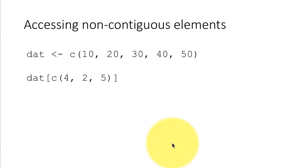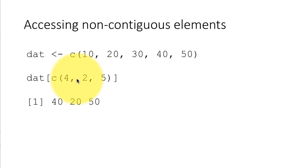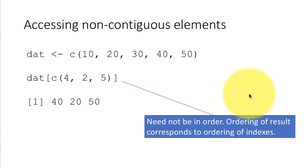Here's another example: dat[c(4, 2, 5)]. We want the fourth element, the second element, and the fifth element. The important point is that the result will have the elements in this specific order — the fourth element comes first (40), then the second, then the fifth. The order in which you supply the elements of the index vector determines the order of the result. So it need not be in sorted order; you can supply indexes in any order you want.